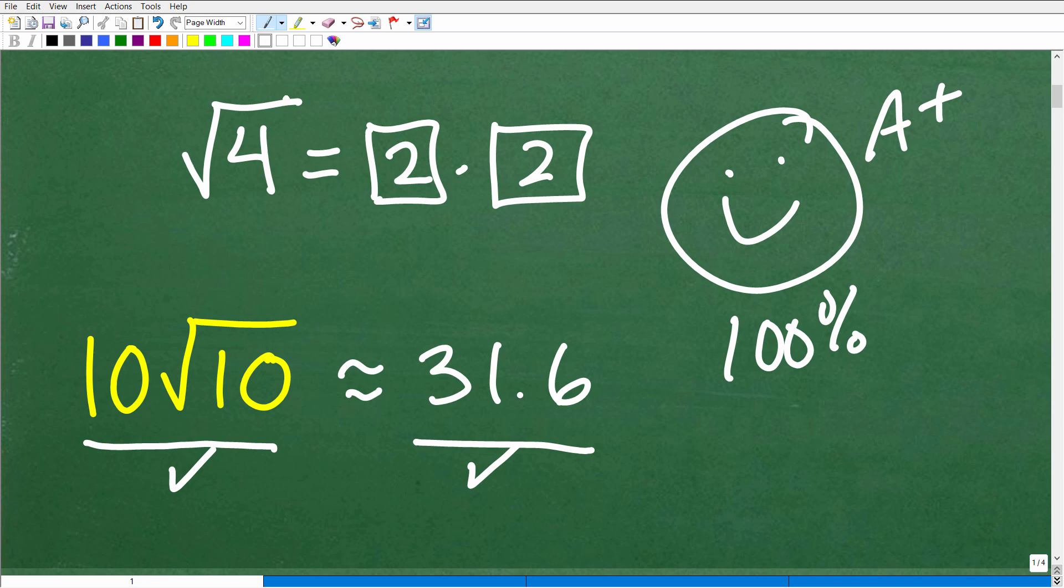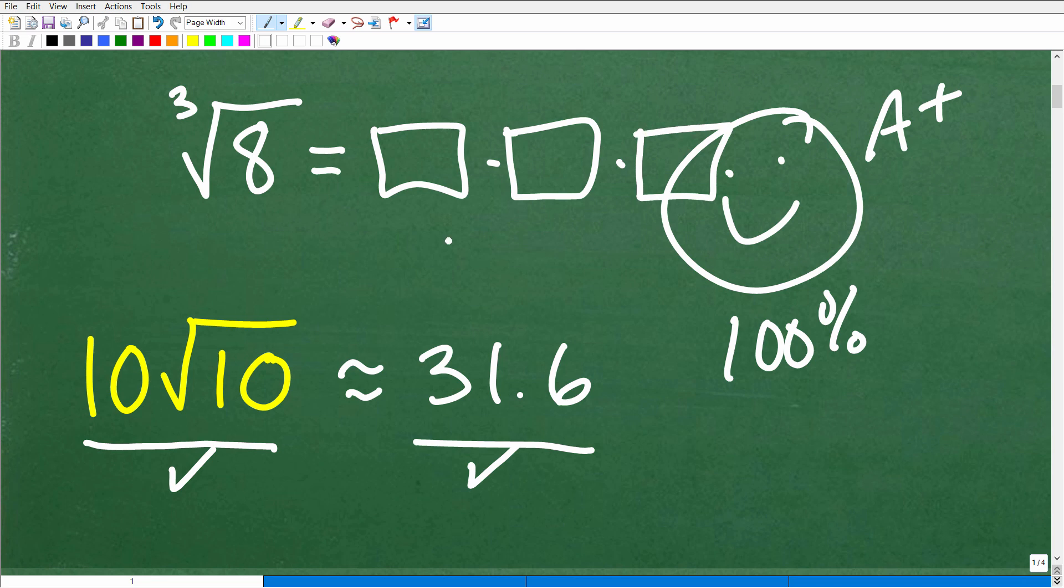So this is a square root. But what if we have something like this with this little 3 over here and 8 right there? What is this? Well, this is a cube root. So basically, this is saying find three numbers, the exact number. When you multiply it by itself three times, you get back to this number. Of course, that would be 2. 2 times 2 times 2 is 8. So this is the cube root.